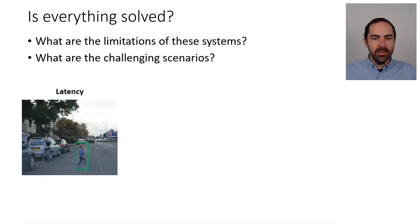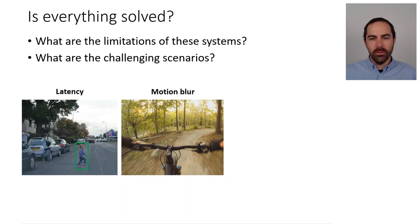One challenging scenario is latency. You want your system to be as fast as possible. Imagine the self-driving case where somebody unexpectedly crosses the road — you want to detect it as soon as possible, because the longer it takes, the higher the chances of an accident. Another challenge is motion blur: cameras have a global exposure, and if you move too fast with respect to the shutter speed, there is motion blur in the scene and there's no way to avoid it.